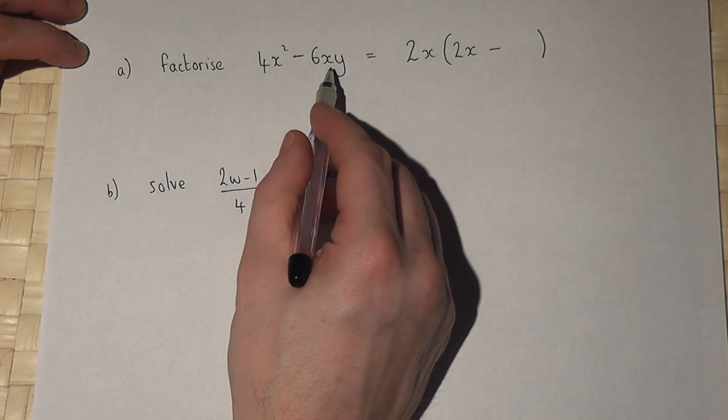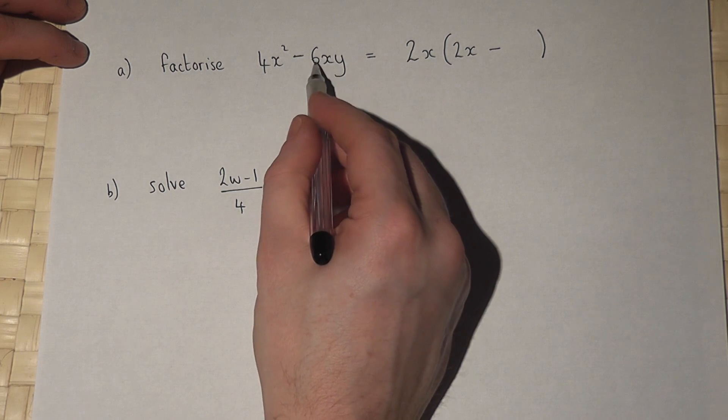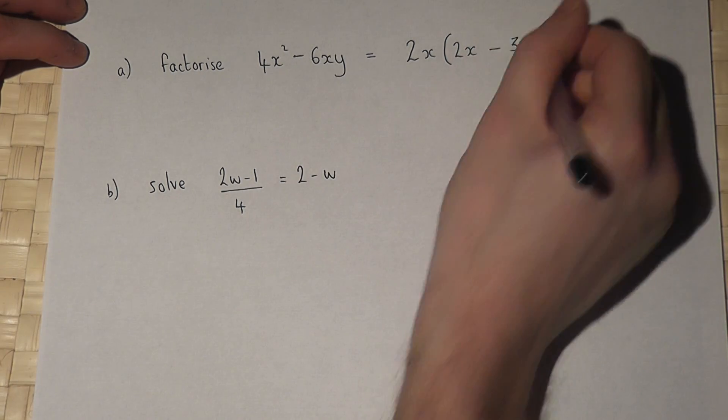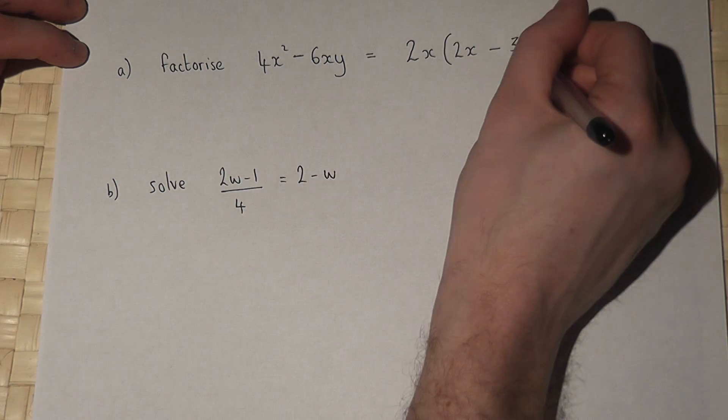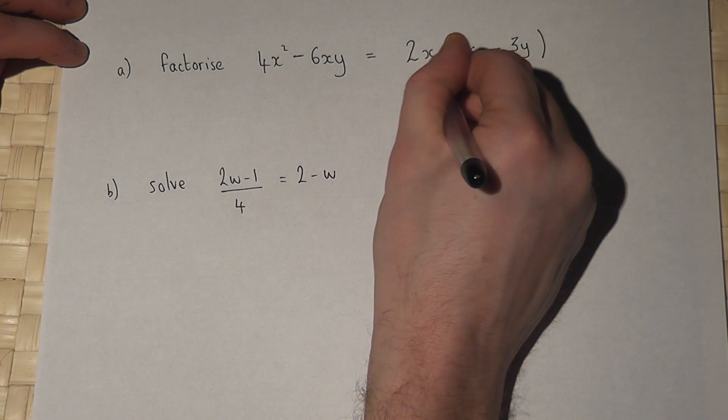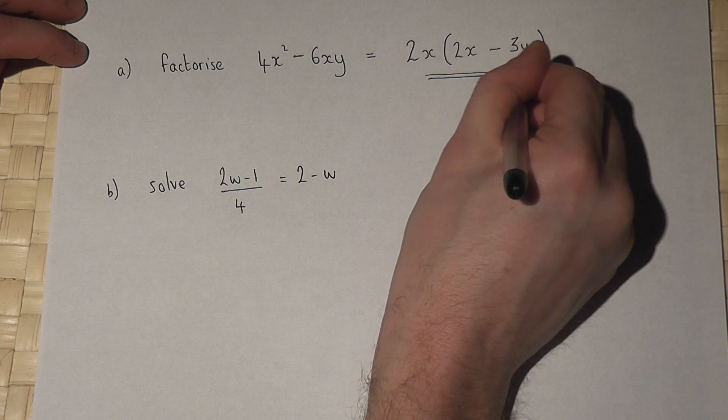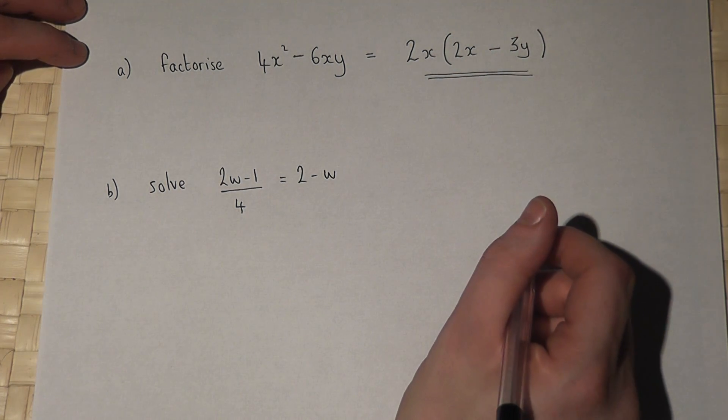Then the second term, there's a 2 there, so to get a 6 requires a 3 because 2 times 3 is 6. The X is already there, so I need a Y. So that factorises to 2X bracket 2X minus 3Y close bracket.